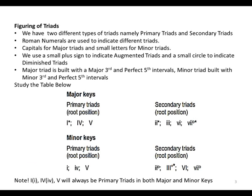We have two different types of triads, namely the primary triad and the secondary triad. We use Roman numerals to indicate the different triads. We use capital Roman numerals for major and small letter numerals for minor triads. We also use a small plus sign to indicate augmented triads and a small circle to indicate diminished triads. Major triads will be built with a major third and a perfect fifth. Minor triads will be built with a minor third and a perfect fifth.